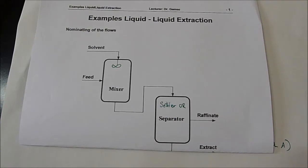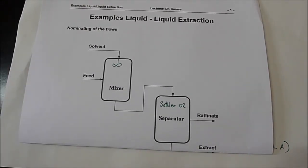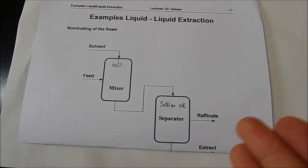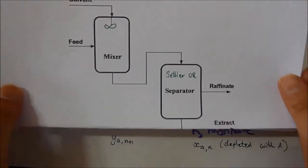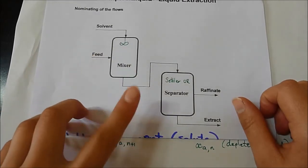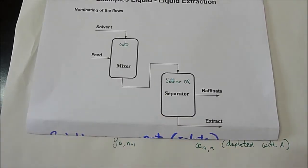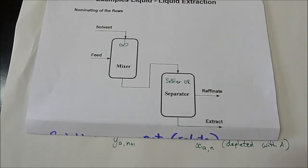First, we need to nominate our flows. Liquid-liquid extraction is most often used in mixers and separators. Feed comes in and solvent comes in, they are mixed well, and then go to the separator. The separator separates the feed mixed with the solvent into raffinate and extract. Extract is the stream that has extracted the main component, and raffinate is the stream with depleted components.